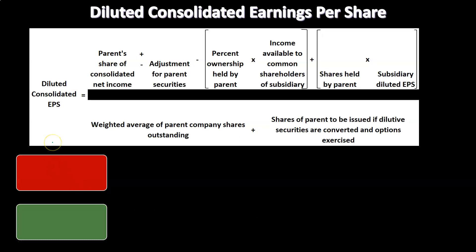For diluted consolidated earnings per share, the formula is: the parent's share of consolidated net income, plus or minus the adjustment for parent securities, minus the percent ownership held by the parent times the income available to common shareholders of the subsidiary, plus the shares held by the parent times the subsidiary's diluted earnings per share — all divided by the weighted average of the parent company shares outstanding plus shares of the parent to be issued if dilutive securities are converted and options exercised.